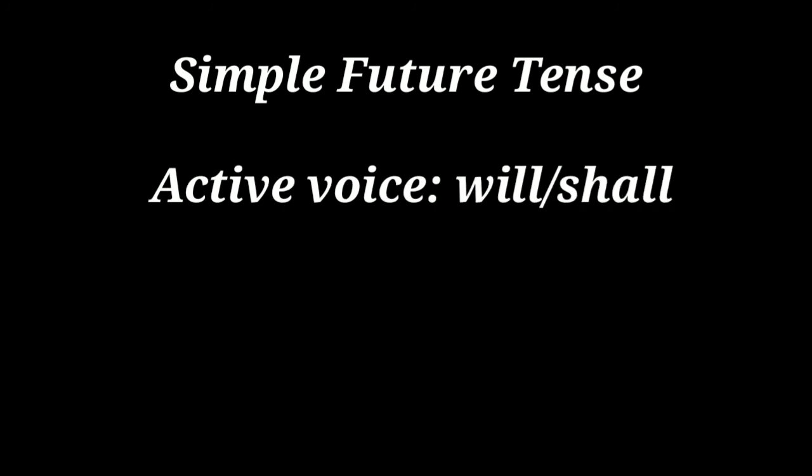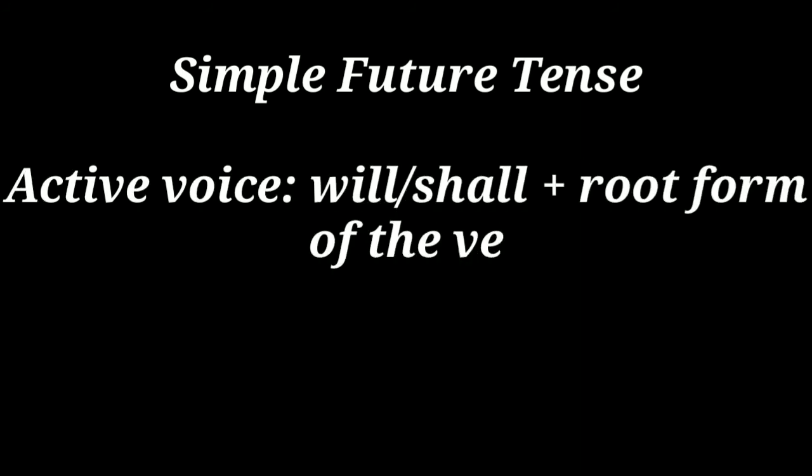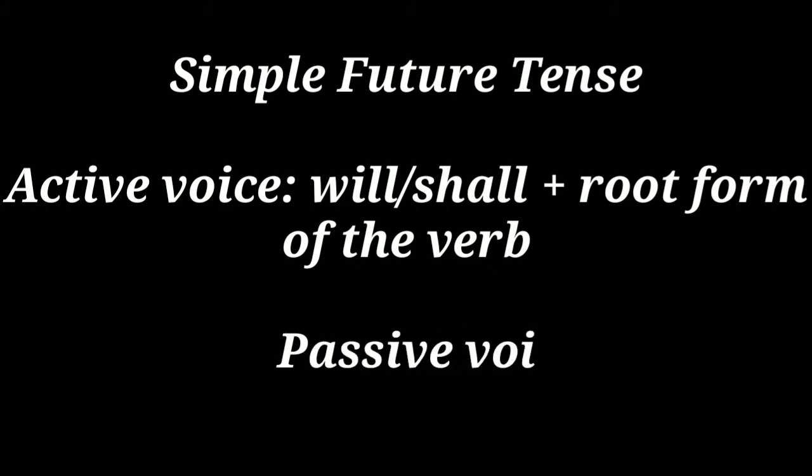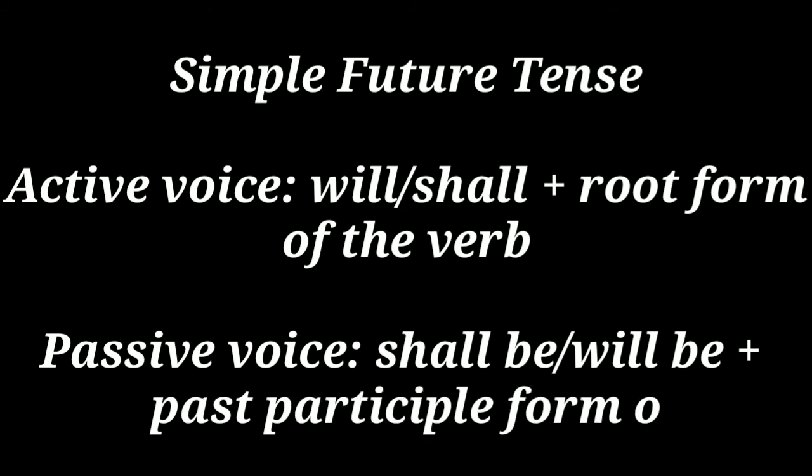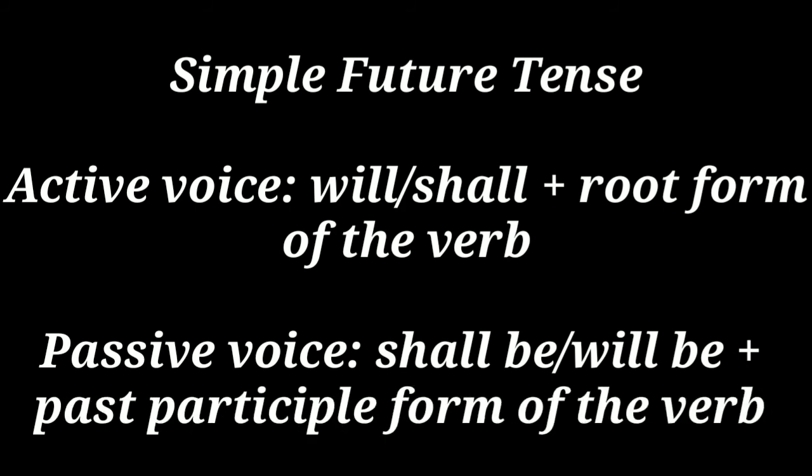In simple future tense, in active voice we write 'shall' or 'will' and the root form of the verb, and in passive voice 'shall be' or 'will be' and the past participle form of the verb. For example: 'She will buy the dress later' in active, and in passive voice: 'The dress will be bought by her later.'